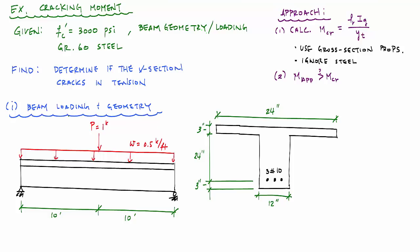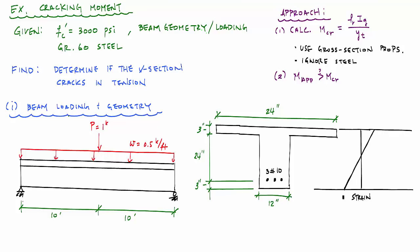Before calculating the cracking moment, it's helpful to draw the strain profile. With the loading shown, the moment causes compression at the top and tension at the bottom. The strain profile is linear: compressive strain at the top, tensile strain at the bottom. The cracking moment corresponds to the condition when the tensile strain at the extreme fiber reaches the value associated with the modulus of rupture — by Hooke's law, that's fr divided by the modulus of elasticity of concrete.